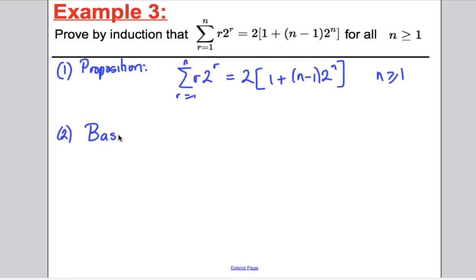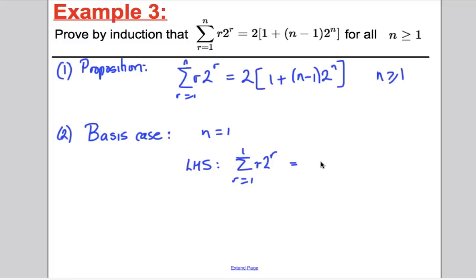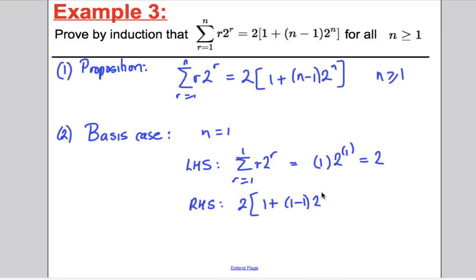The left-hand side is the sum from r = 1 to 1 of r·2^r — working out this when r = 1, you get 1·2¹ = 2. The right-hand side is 2(1 + (1−1)·2¹) = 2(1 + 0) = 2. Therefore true for n = 1, so the proposition is true for n = 1.